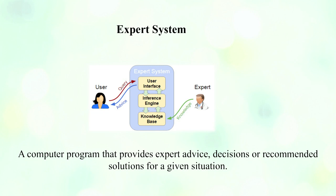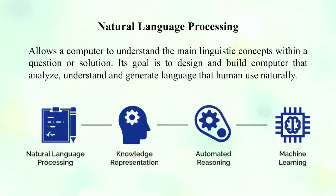In the application of artificial intelligence there are four key components. First, the expert system: a computer program that provides expert advice, decisions, or recommended solutions for a given situation. Second, natural language processing: allows a computer to understand linguistic concepts — semantics and syntax — within questions or solutions. Its goal is to design and build computers that can analyze, understand, and generate language as humans use it naturally.